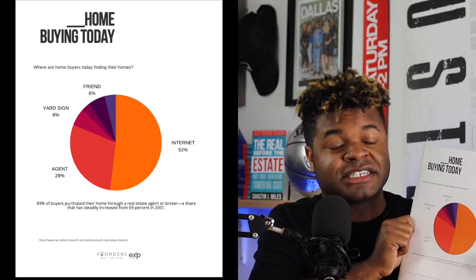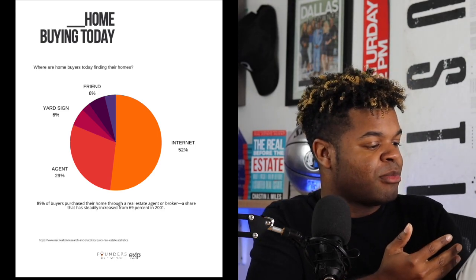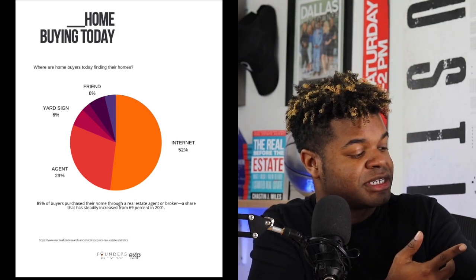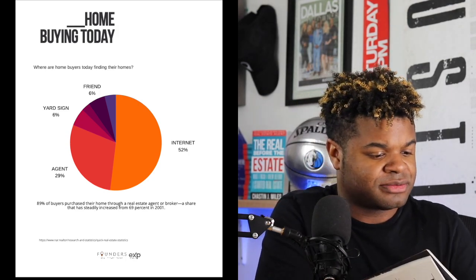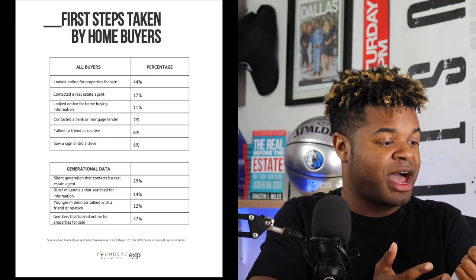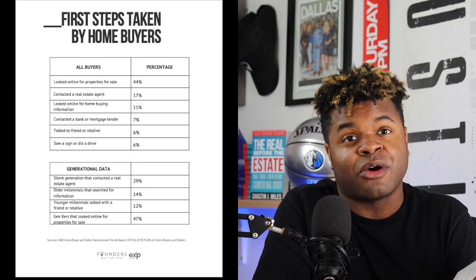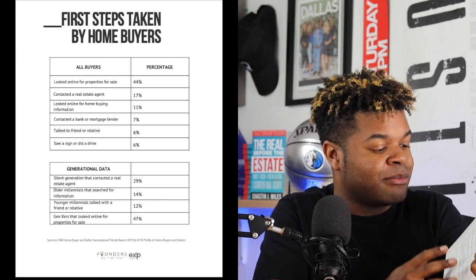Next I move into explaining home buying and marketing with a chart I created in Canva — this whole book was created in Canva. It shows where people start their home search, highlighting that 52% of consumers start on the internet. I also show that 89% of buyers purchase their home through a real estate agent, which is great for for-sale-by-owners. Then I get into the steps taken by home buyers — showing sellers that 44% start by looking for property online, 17% start by contacting a real estate agent.